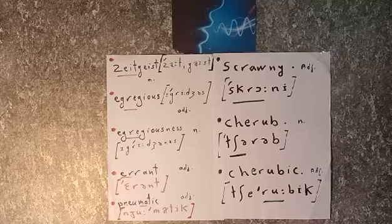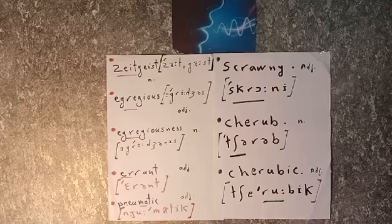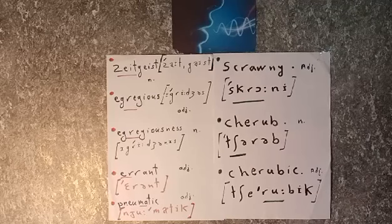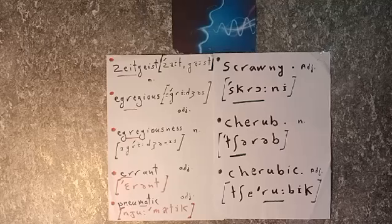The next word is 'errant', an adjective. It contains two syllables. Errant means straying or going from the accepted course or standard — being errant. It's a disyllabic word and the first syllable is stressed: errant.